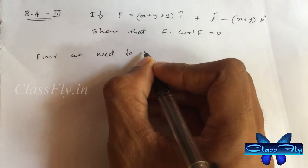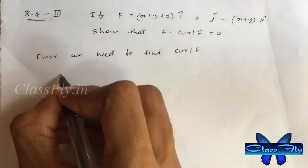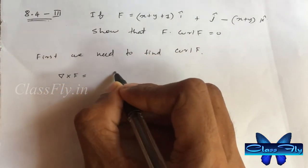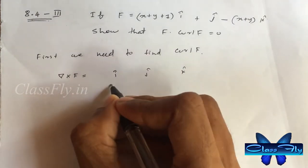First we need to find curl f. Del cross f. For that we have to solve this determinant.